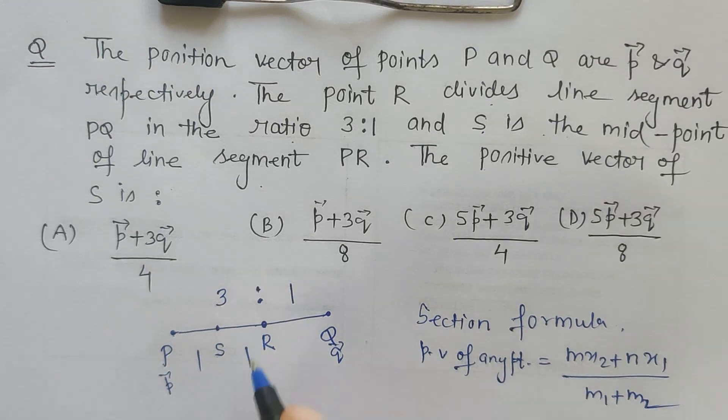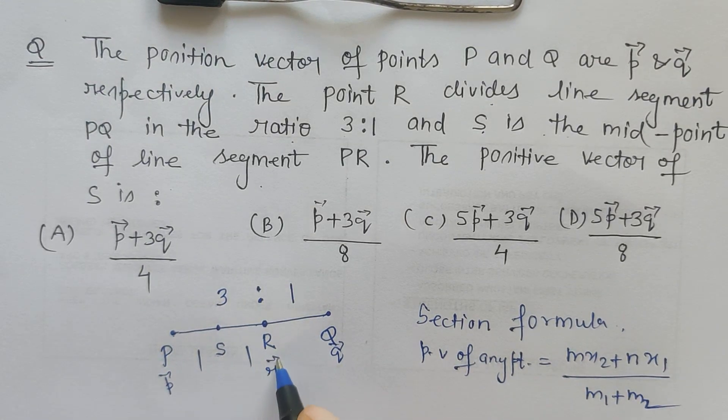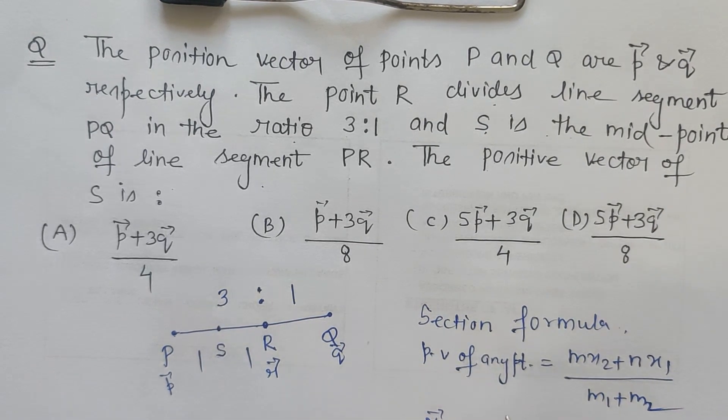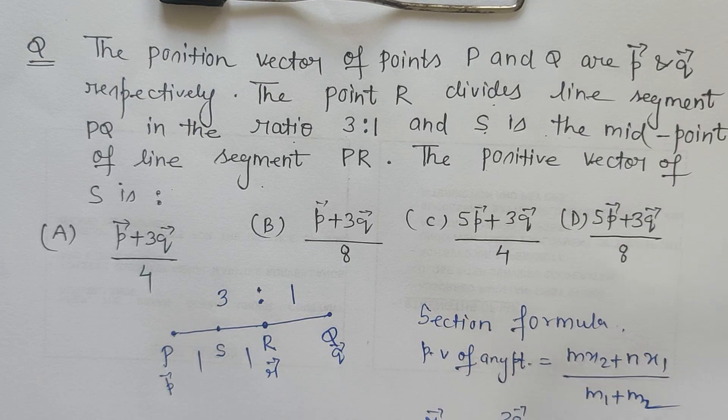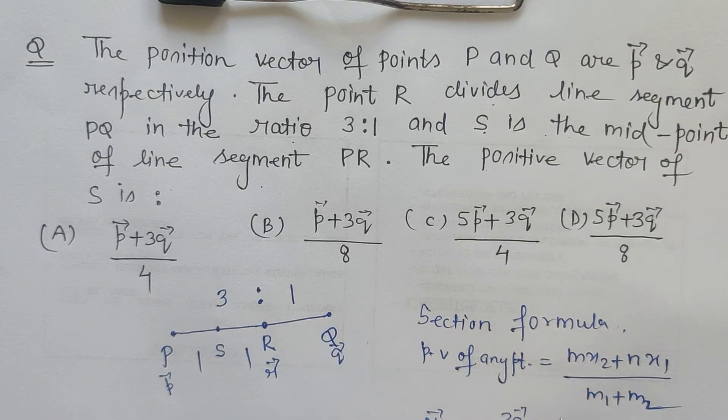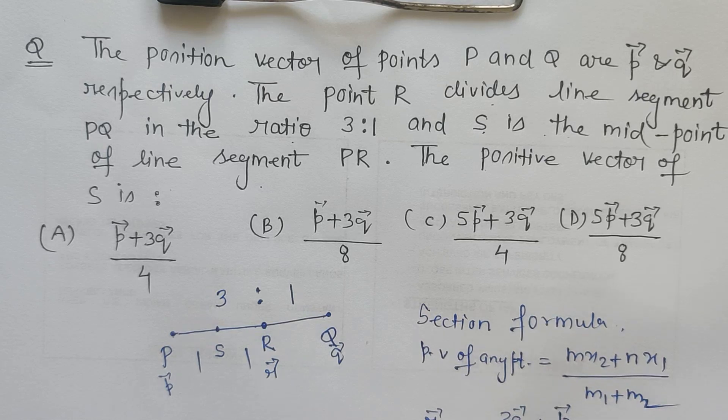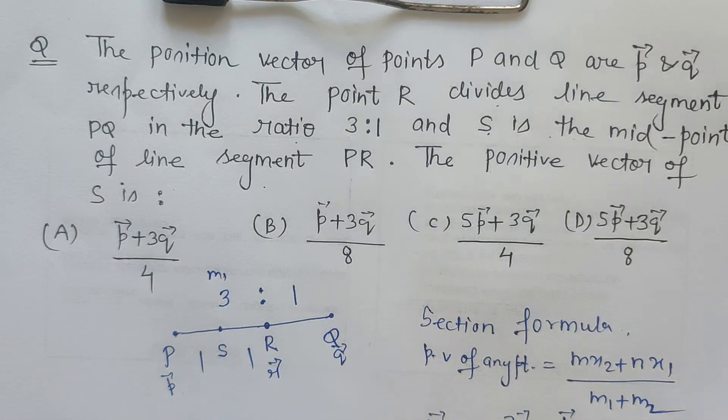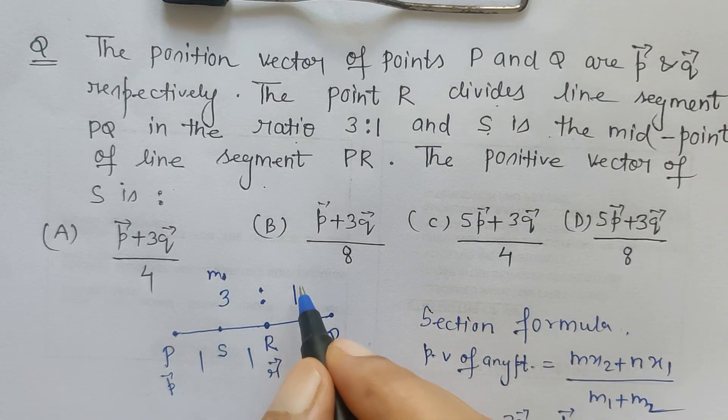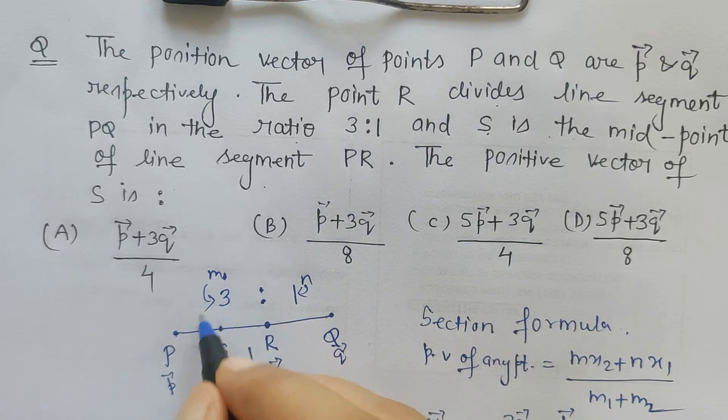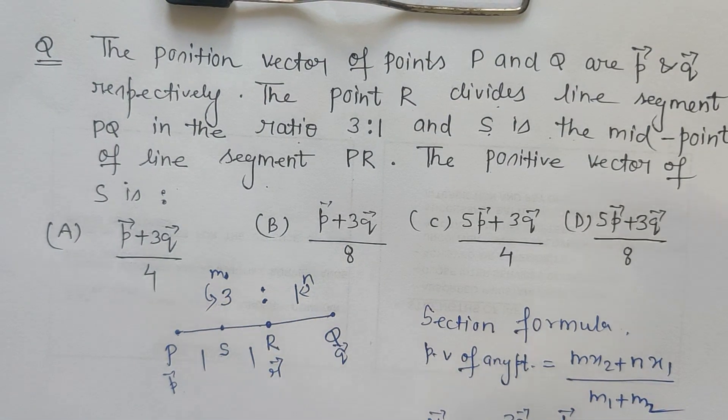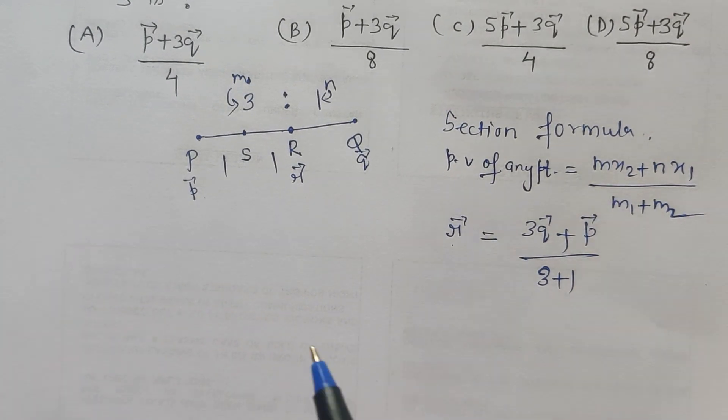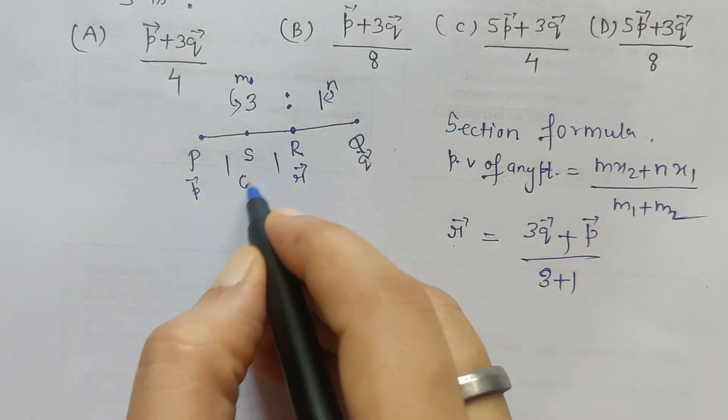So here let us say position vector of R is R vector. So here R vector is 3Q vector plus 1 into P vector upon 3 plus 1. Because here value of M 1 is 3, M is 3 and N is 1, isn't it?